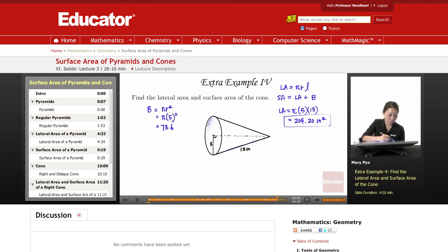The order of operations, you have to do exponent before you multiply. 25 times pi.